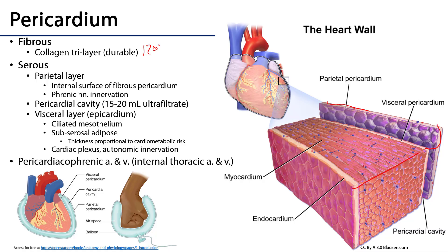Deep to the fibrous pericardium is the parietal layer of the serous pericardium, also known as the parietal pericardium. This is a serosal membrane — simple squamous epithelium with a basement membrane below it. The parietal layer of the serous pericardium is innervated by branches of the phrenic nerves, so pain is carried through the roots of the phrenic nerve — C3, C4, C5 keeps the diaphragm alive.